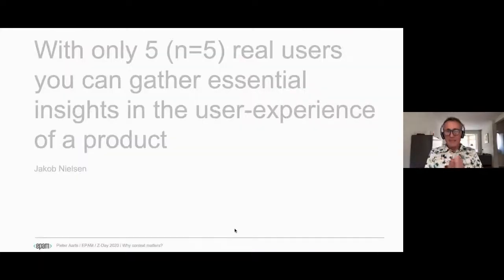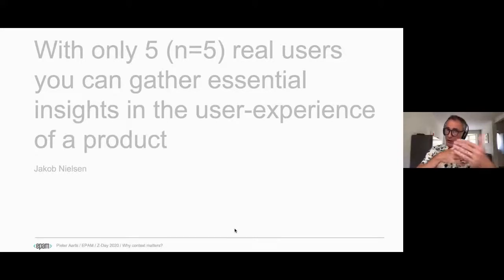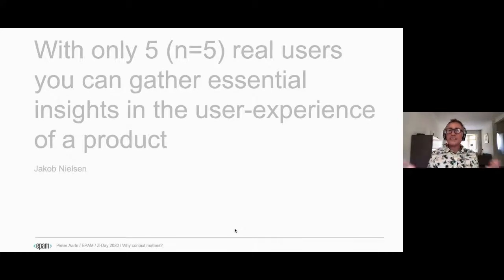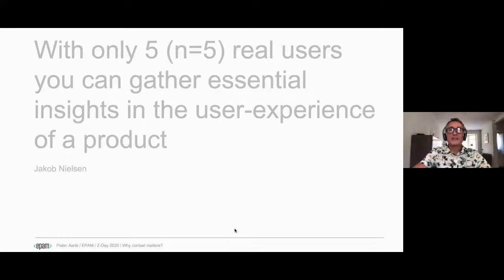The same goes for Jakob Nielsen. He's one of the founders of the Nielsen Norman Group — a big hero of usability. He really claims that with only five real users, you can get essential insights into the user experience of a product or service. There's no rocket science; you can easily find five real users. And the sooner, the better in my experience.